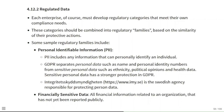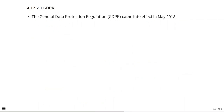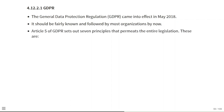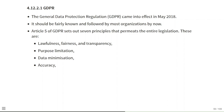Regulated data: each enterprise must develop regulatory categories meeting their own compliance needs, grouped into regulatory families based on similarity of protective actions. Sample regulatory families include: Personal Identifiable Information (PII) — any information that can personally identify an individual. GDPR separates personal data such as name and personal identity numbers from sensitive personal data such as ethnicity, political opinions and health data, with sensitive personal data having stronger protection. Financially sensitive data covers all financial information related to an organization not yet reported publicly. Article 5 of GDPR sets out seven principles: lawfulness, fairness and transparency; purpose limitation; data minimization; accuracy; storage limitation; integrity and confidentiality; and accountability.